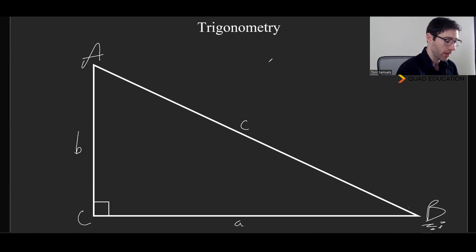And then the last identity is going to be the tangent of an angle, which is just going to be the opposite side divided by the adjacent side. And in the case of angle B, that's going to be side b divided by side a. And so those are all of the three properties that we're going to look at today.